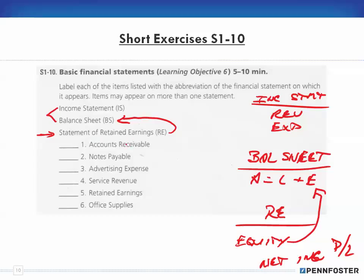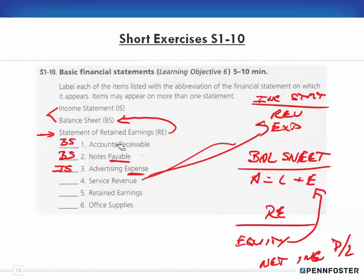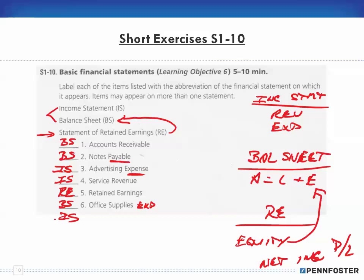Accounts receivable is an asset — found on the balance sheet. Notes payable — the term 'payable' tells us it's a liability — also on the balance sheet. Advertising expense — the word 'expense' tells us it's on the income statement. Service revenue is on the income statement. Retained earnings appears on the retained earnings statement. Office supplies, if owned, is an asset on the balance sheet; if it said 'office supplies expense,' it would be on the income statement.